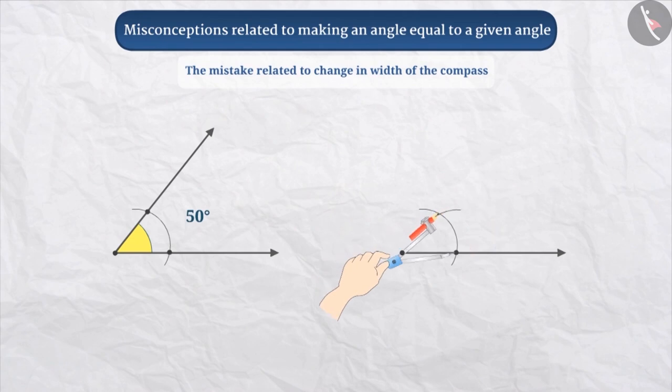When children try to make angles using compass, they often get an incorrect measurement of the angle because of this mistake.